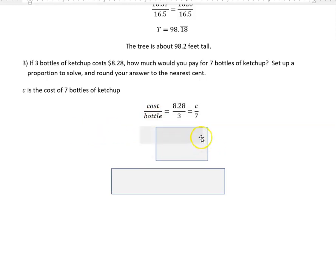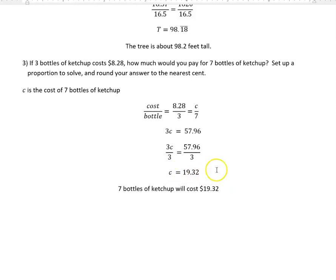We're going to cross multiply again, three times C and 8.28 times seven. Once we get that, 8.28 times seven was 57.96. We're going to divide both sides by the coefficient, and the coefficient is three. Threes cancel, leaving C, and 57.96 divided by three gives us 19.32. So C was the cost of seven bottles of ketchup, so seven bottles of ketchup will cost 19 dollars and 32 cents.